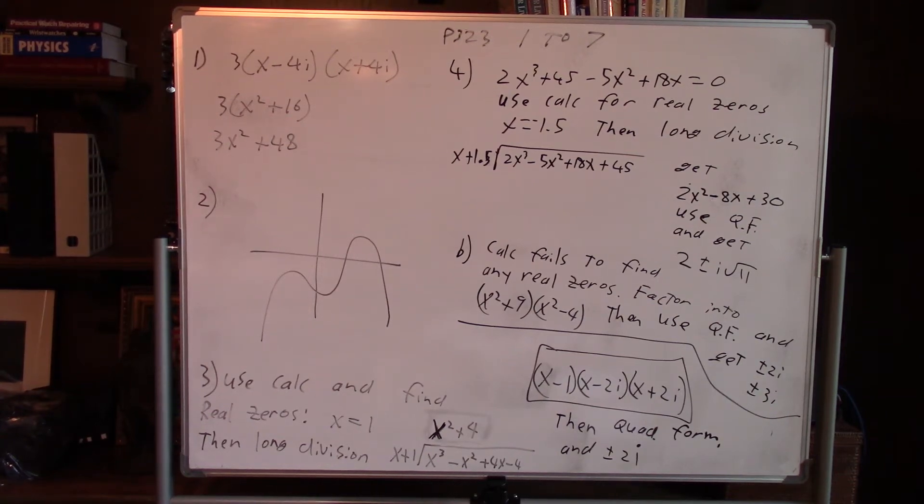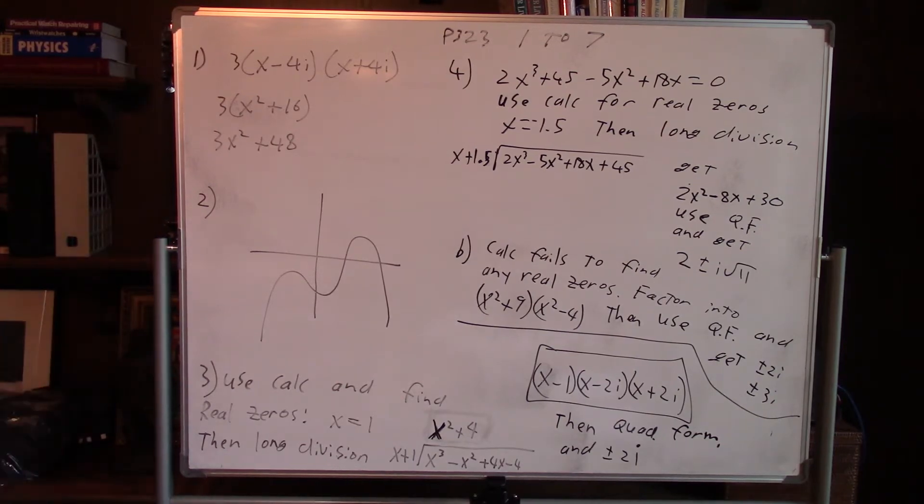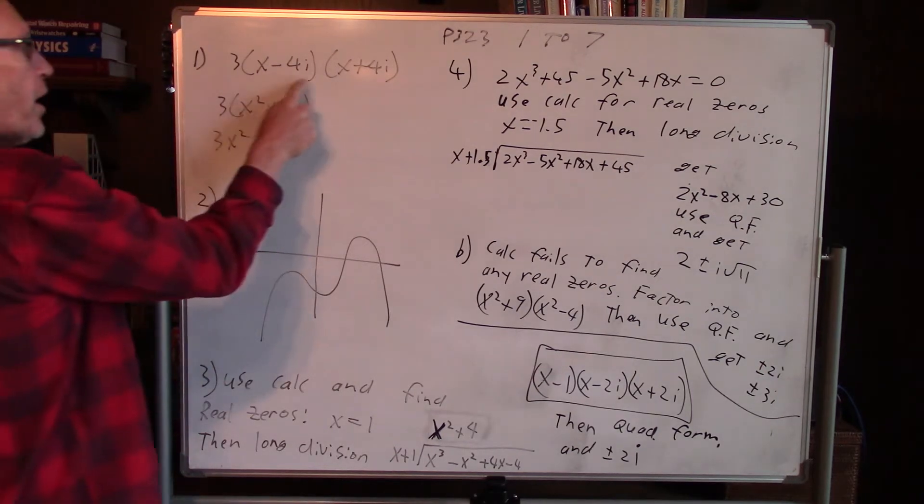Okay, here's the page 323, problems 1 to 7 set. Problem 1 says find the quadratic polynomial with zeros of plus or minus 4i.